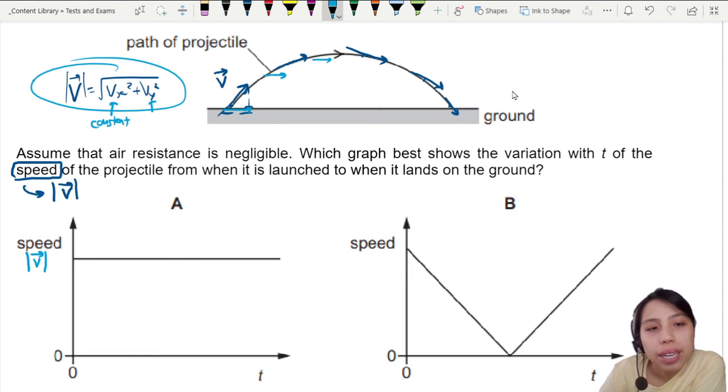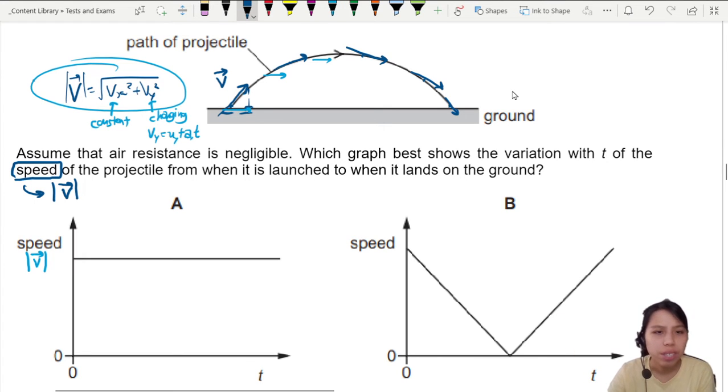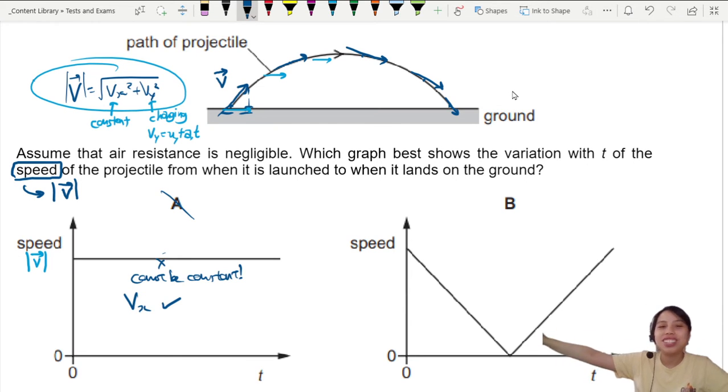But the Vy, yes this one is changing. Vy equals u plus at for example. It changes depending on where you are. Sometimes it's very big, sometimes very small. So it cannot be constant already, so this one is out. But if I say this is Vx, then it's correct. Vx is just steady same all the way horizontal.